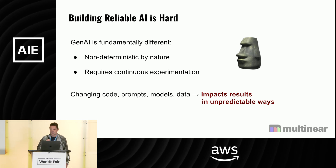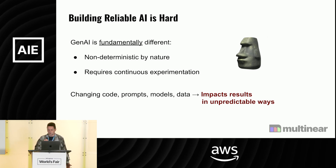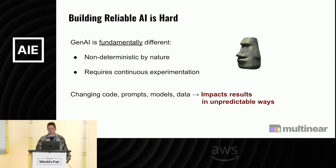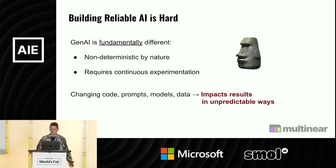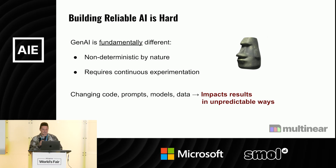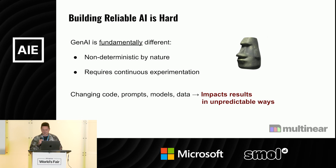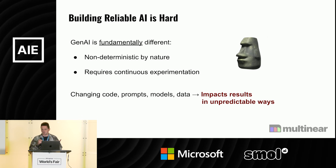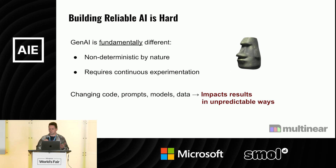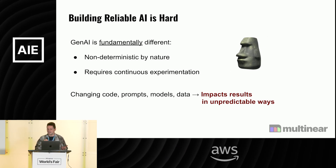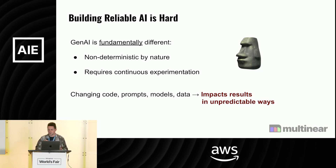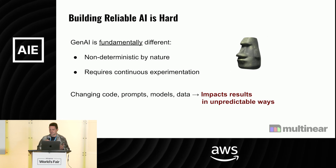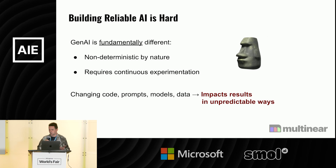This starts requiring a data science approach, continuous experimentation. You need to try this prompt, try that model, try this approach, et cetera. And everything that represents your solution — your code, your logic, the prompts that you use, the models that you use, the data that you base your solution on — changing any of that impacts your solution in unexpected ways.